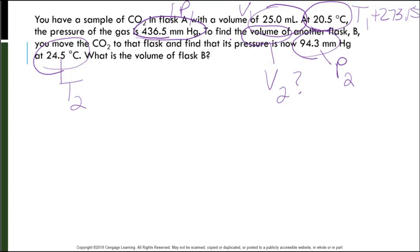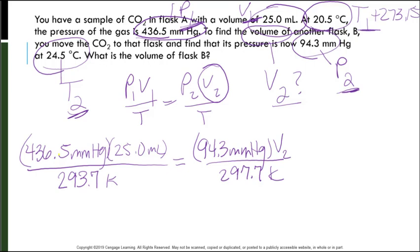We have a lot of variables here. Notice that I have a pressure, a volume, and a temperature of an initial. A pressure, a temperature, and I need to find the volume of the second one. So that is a combined gas law. Let's write it out. P1V1 over T1 equals P2V2 over T2. Our unknown is going to be this V2. Let's write in what we know. I put in all of the variables that we knew. P1 times V1 over T1 equals P2 times V2 over T2.